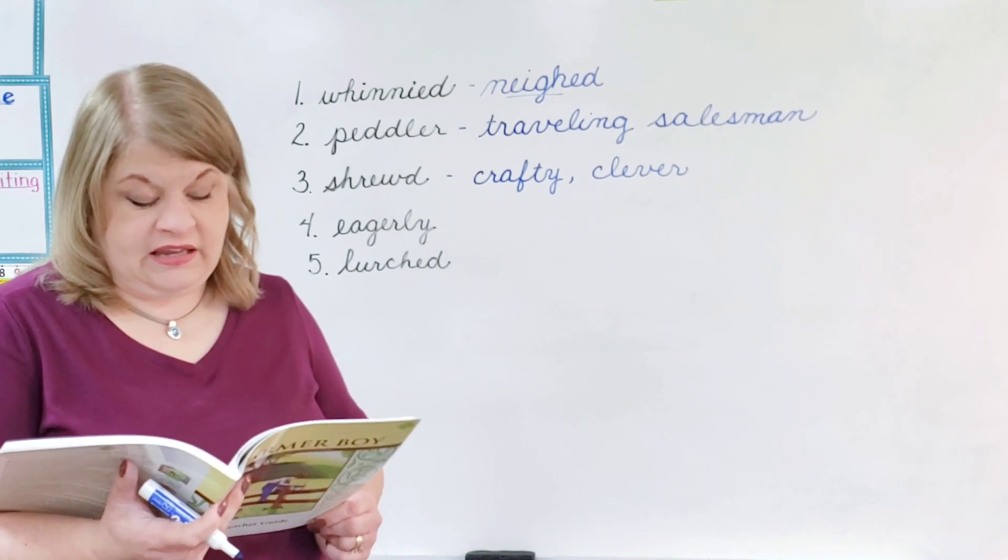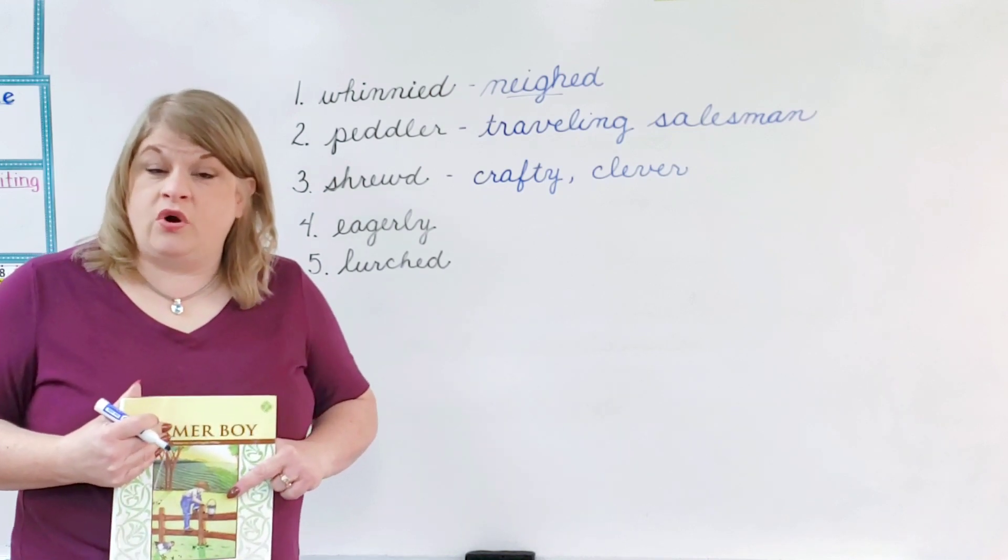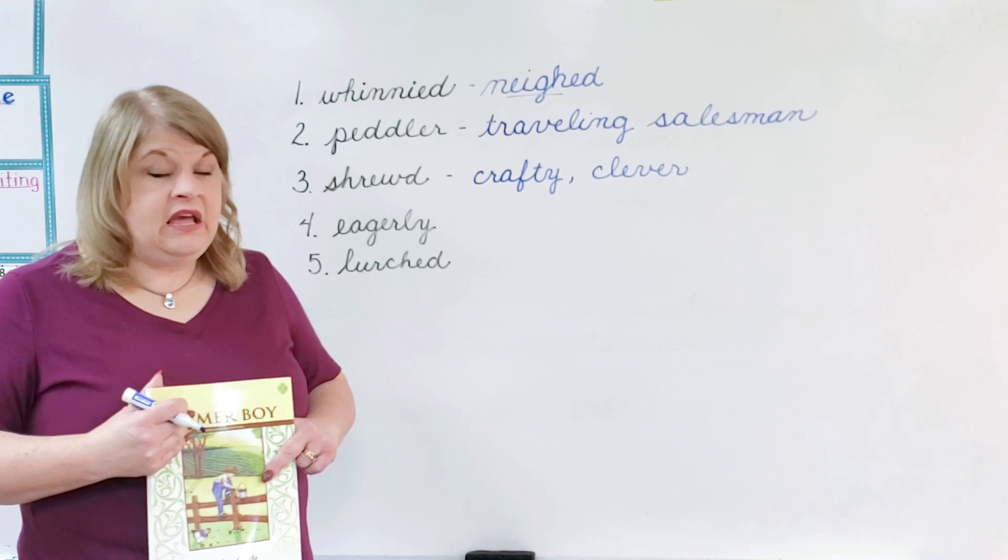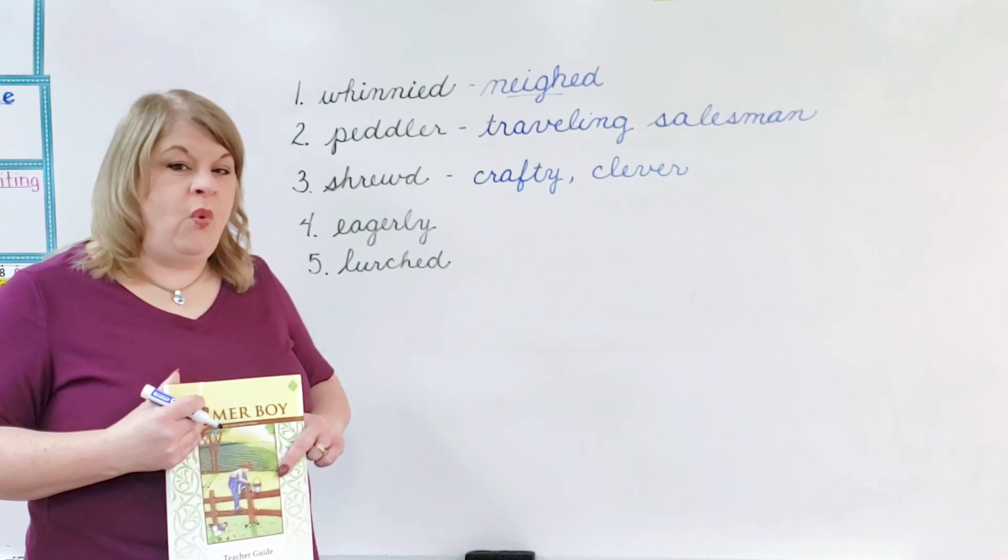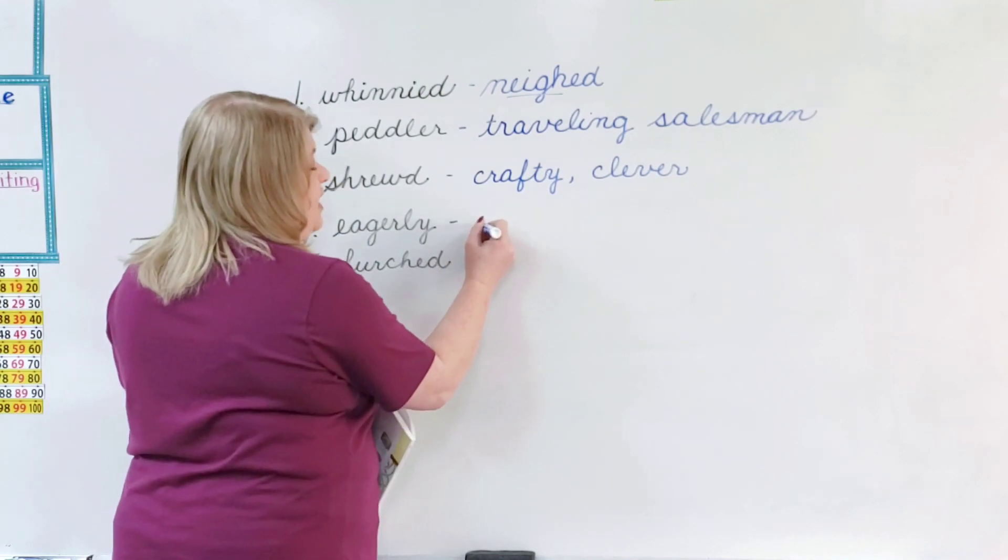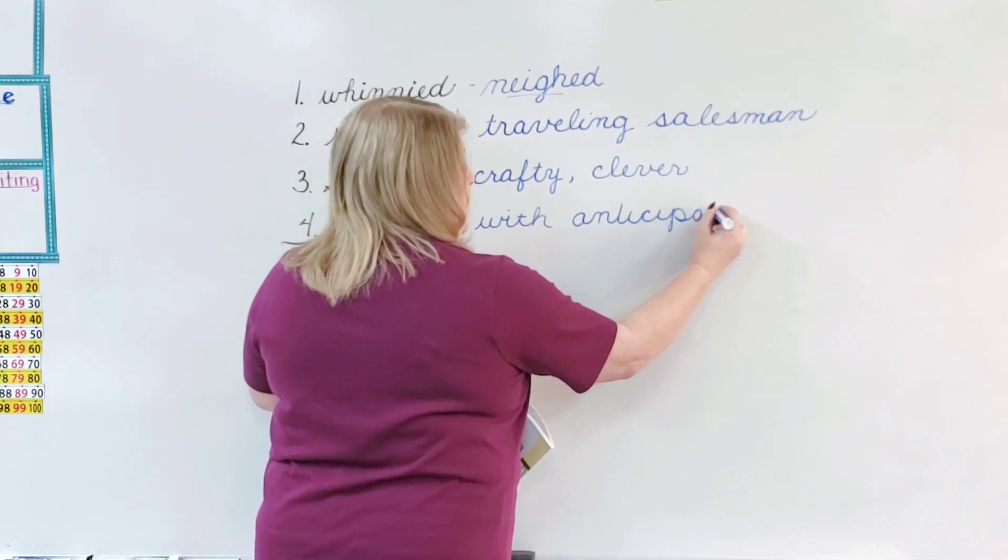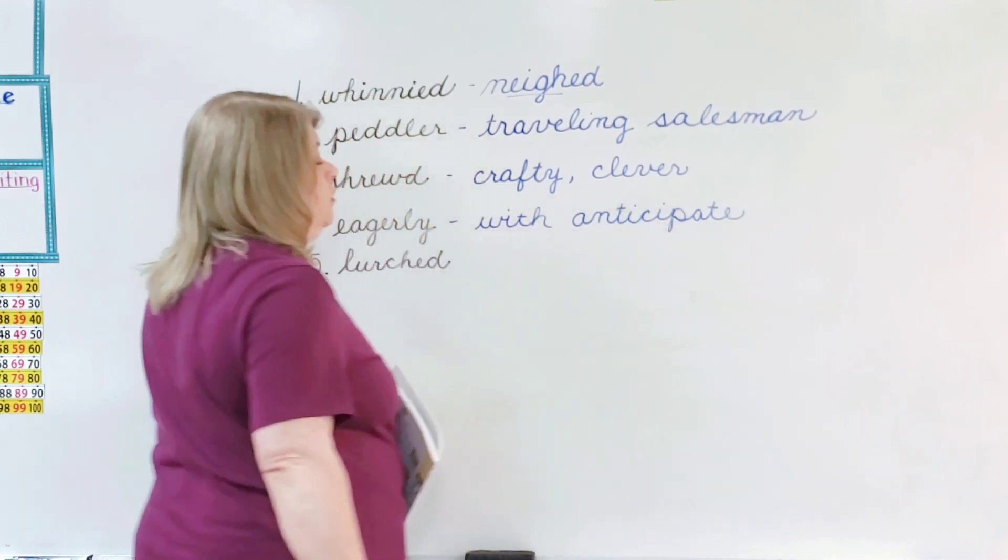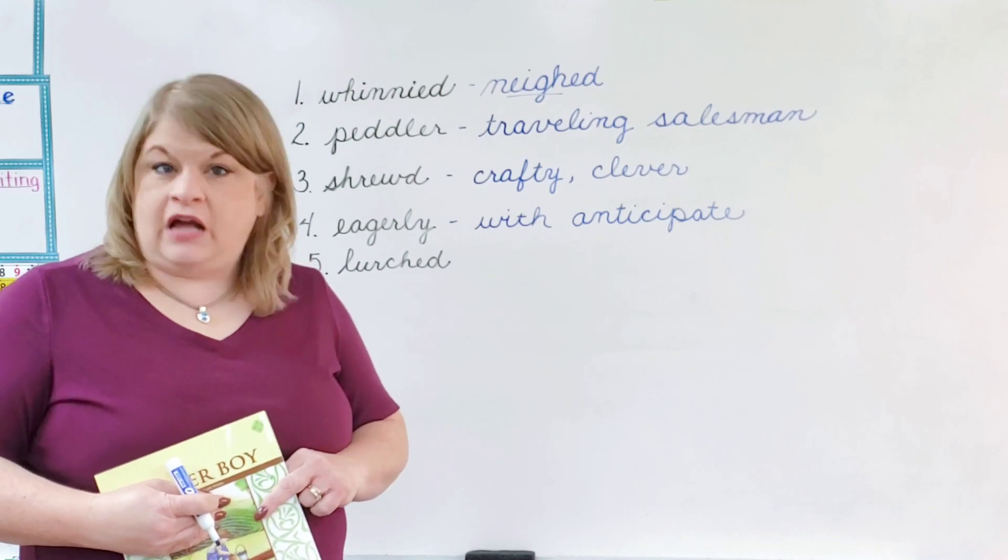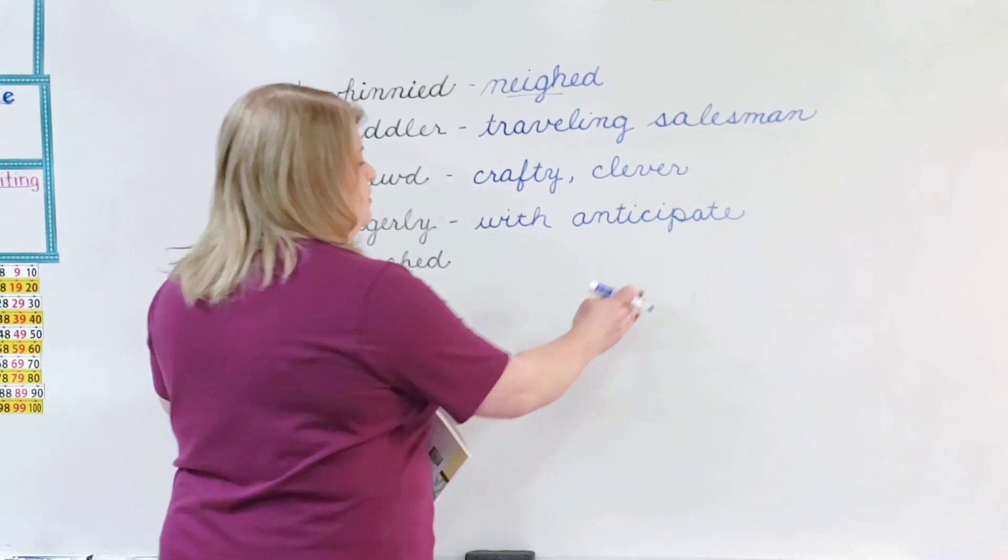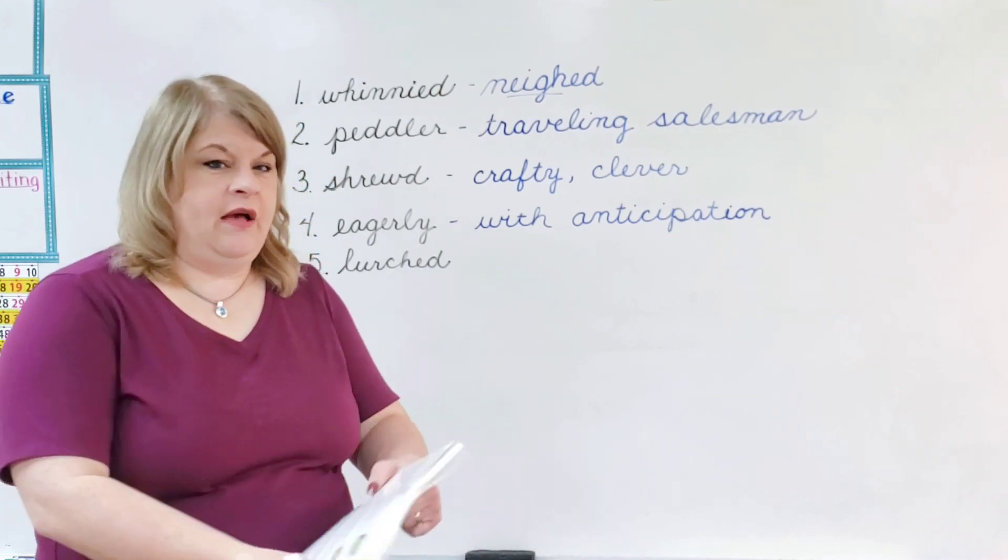Number four. The big white horse stepped out eagerly. If you're eager to do something, that means you really want to do it, right? So this horse stepped out eagerly. E-A-G-E-R-L-Y. Eagerly. It's an adverb. It means in a certain way. Eagerly means that he stepped out in an eager way. So the book puts it as with anticipation. If you anticipate something, you expect it to happen. If you have a birthday coming up soon, you're anticipating your birthday coming. You're excited about it. You're eager to have it come.